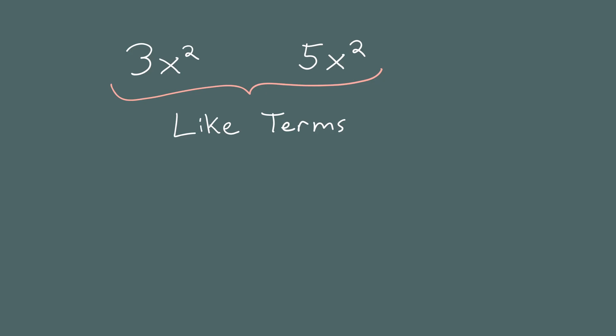When you have like terms, you can add them together into a single term. 3x squared plus 5x squared equals 8x squared. To add these like terms, we just added the numbers. But why does this make sense?